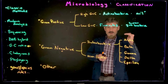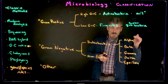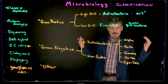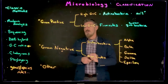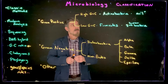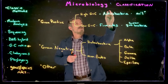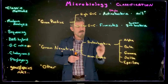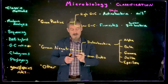The Firmicutes is another group of gram-positive bacteria. They could be cocci or bacilli, and a large number of them are found within the human gut. These are the names of phyla — so Actinobacteria, Firmicutes, and Proteobacteria are all going to be phyla.